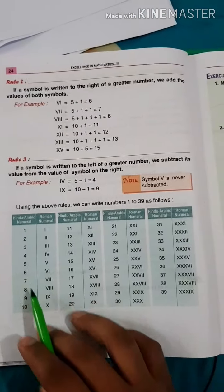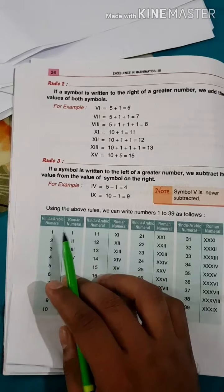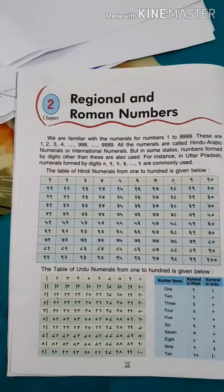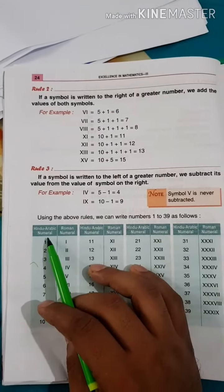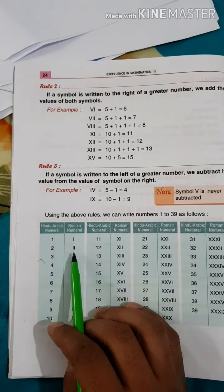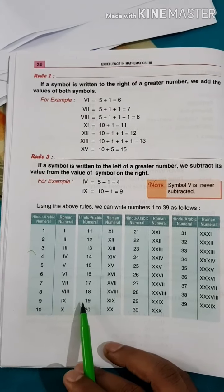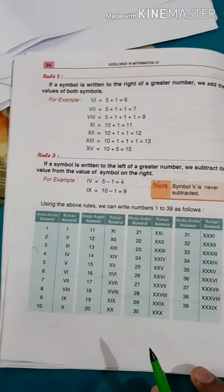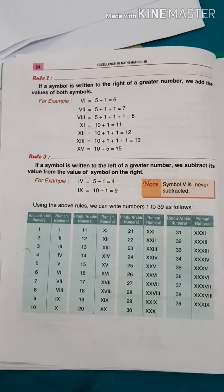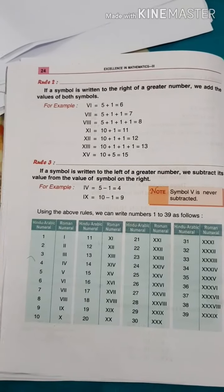Okay students, please draw this table also in your fair copy. This table is Roman numbers. Here it is given Hindu-Arabic numeral 1, 2, 3, 4, 5, and here it is I, two times I. Just draw this table in your fair copy, and I will add one video that will help you study more.